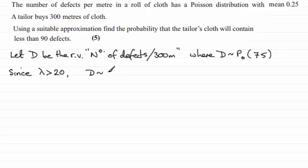So we can say that D is distributed as a normal approximation, approximately. Remember it's not a normal distribution, so that's why I've written approximately on the end. And a normal distribution has two parameters, the mean and the variance, and the mean and variance of a Poisson distribution are exactly the same. In this case, 75. So put 75 there and 75 there.